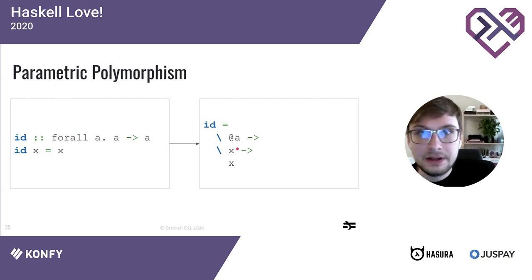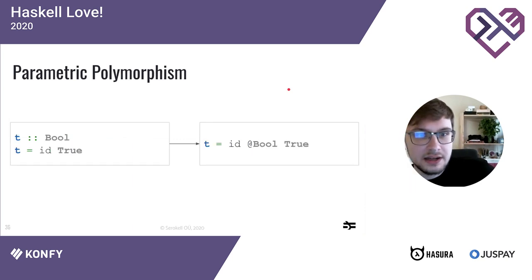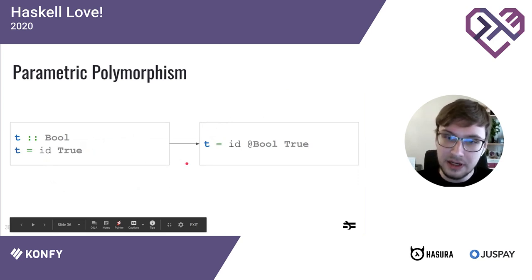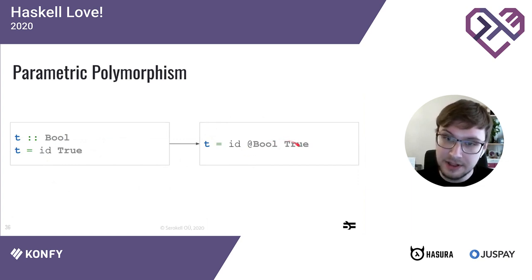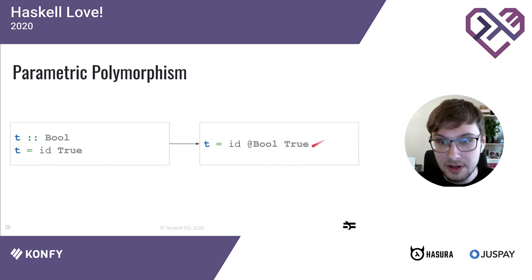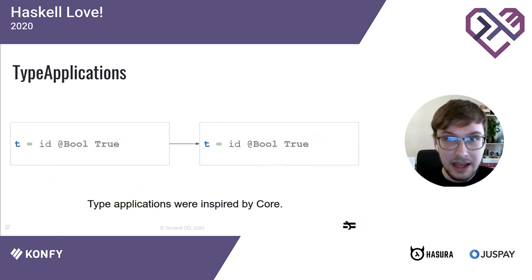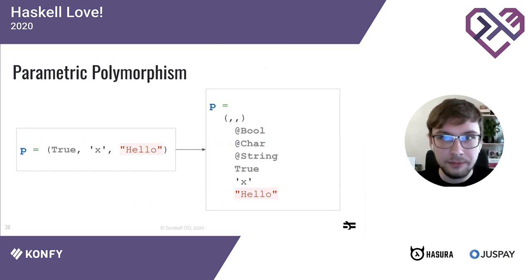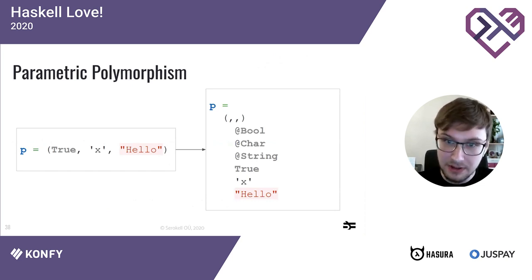In surface Haskell we write 'id x', but in the Core program we have 'id a x' where a is the type variable and x is a value of type a. When we use a polymorphic function like id in surface Haskell we just give it value parameters, but in Core we supply both the type parameter and the value parameter. Type applications are actually a part of Core making an appearance in surface Haskell as an extension. For example, constructing a three-element tuple in Core passes six parameters — first the element types (Bool, Char, String), then the elements (True, x, "hello").